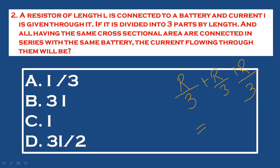Then total resistance — the three parts are connected in series — equals R. In series combination, the current flowing through each resistor will be the same. So with battery connected, current I flows through each resistor. The answer is C: current flowing through them will be I.